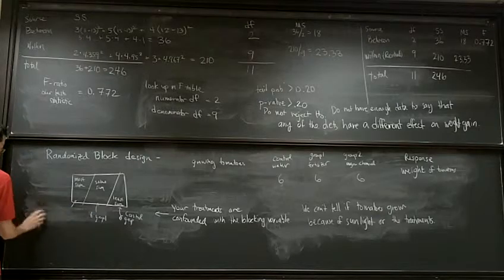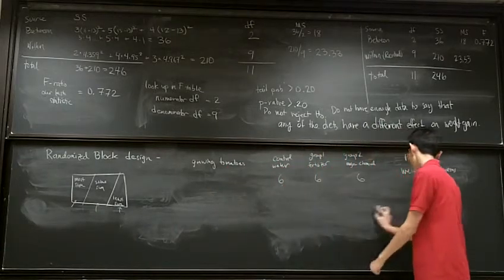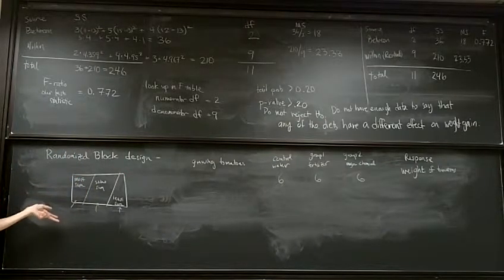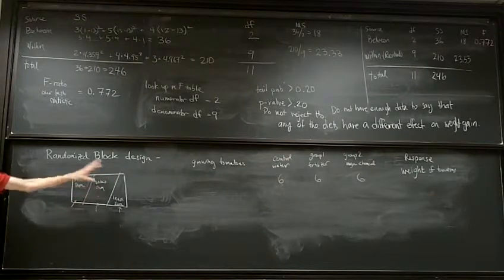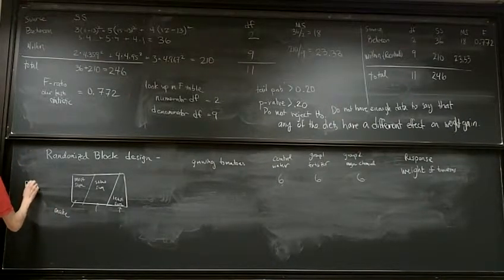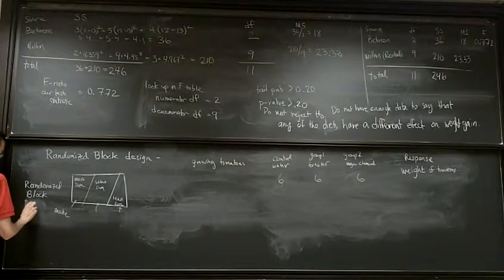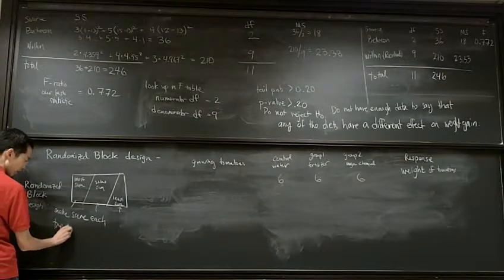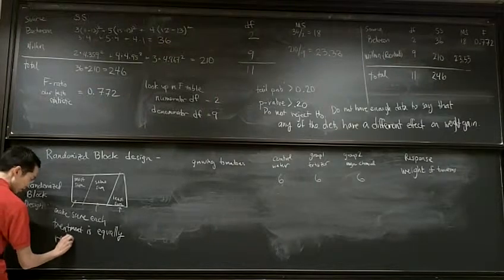So we do something called block design and that we make sure that for this blocking variable in our case is the sunlight we make sure that we have two control plants two from group one and two from group three and we make sure we have each of the groups each of the treatments equally represented in the different sunlight zones so a randomized block design.